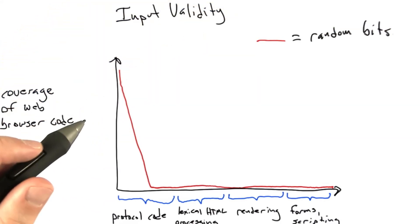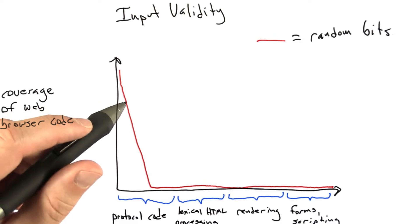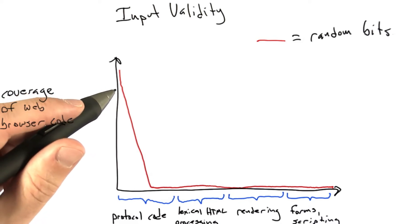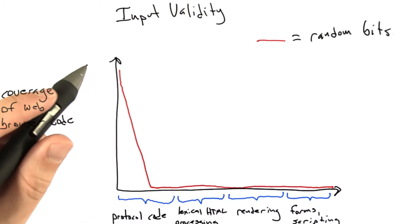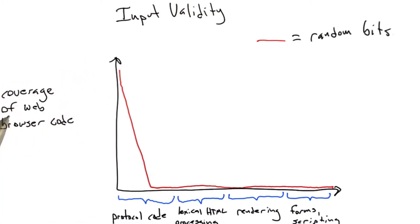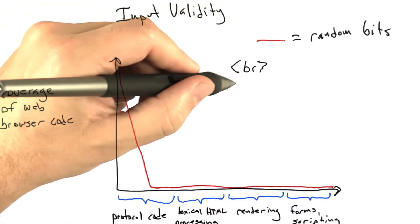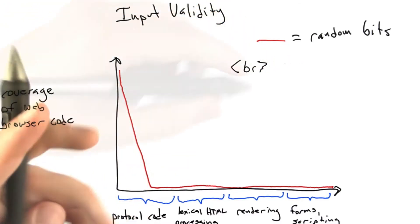The next thing we could do is we could rig our random input generator so that it respects the constraints of the HTTP protocol. Furthermore, we could adapt it so the text that it generates contains valid lexical elements of HTML. That is to say, it's composed of things like braces with tags in them, other kinds of text, other sorts of directives. So this isn't too hard to do.